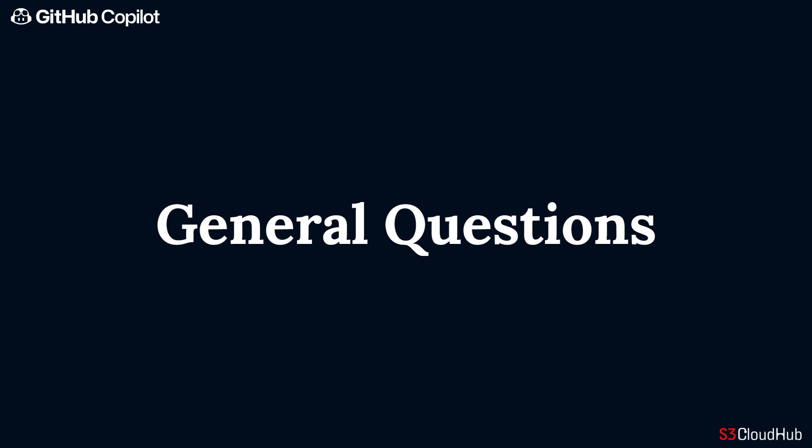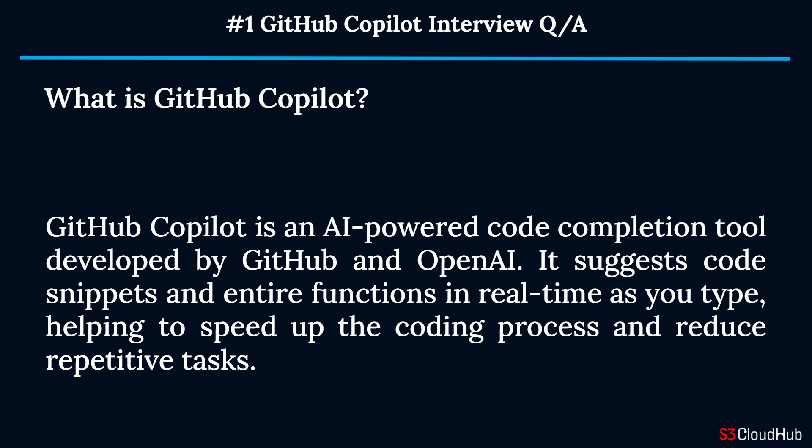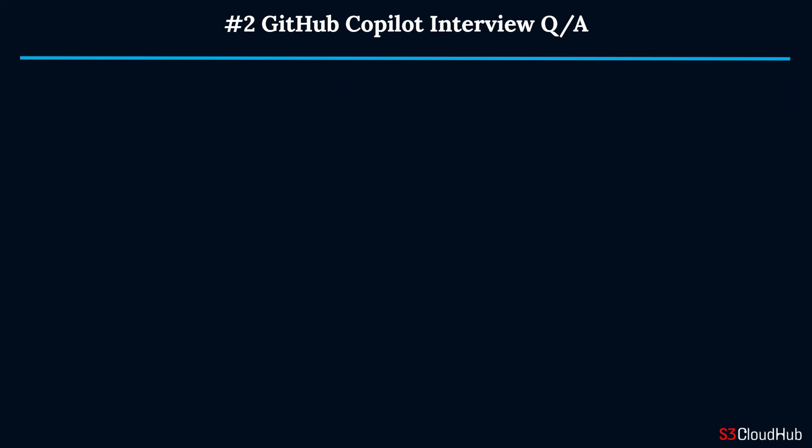The first topic is general questions. Question one: What is GitHub Copilot? GitHub Copilot is an AI-powered code completion tool developed by GitHub and OpenAI. It suggests code snippets and entire functions in real time as you type, helping to speed up the coding process and reduce repetitive tasks.